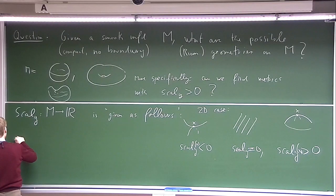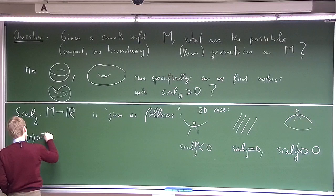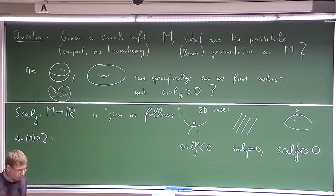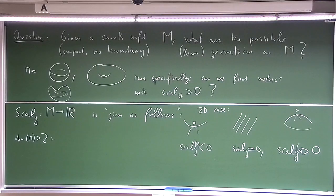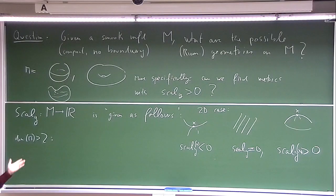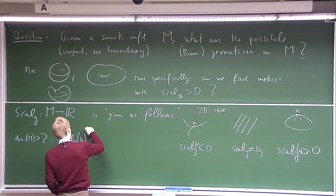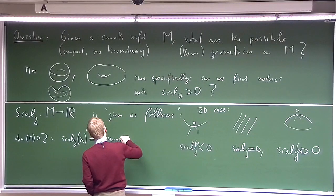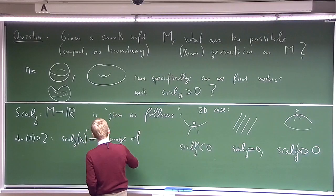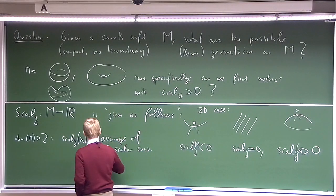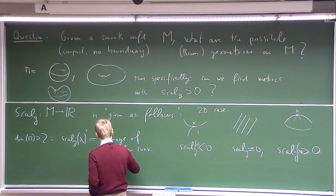In the higher-dimensional case, it's not difficult to understand, with the exception that we can't see these higher-dimensional metrics. But for a high-dimensional manifold, if you pick a point, you can look at all the two-dimensional surfaces going through that point, then average the curvatures over all possible surfaces. The scalar curvature is the average of all sectional curvatures of the surfaces through that point.